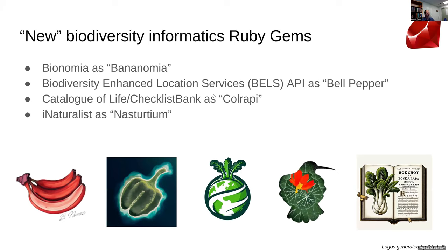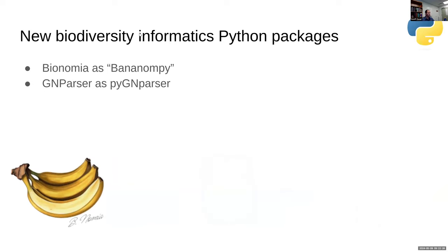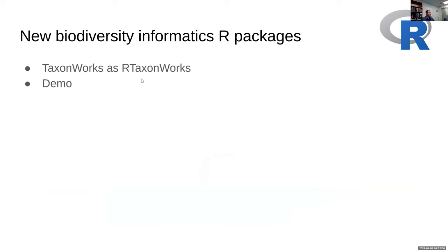These projects are available now: Bionomia is wrapped, along with the Biodiversity Enhanced Location Services, Catalog of Life and Checklist Bank as Chlorophy, and iNaturalist as Asterium. There's also Bok Choy wrapping the BHL MIMS project — not released quite yet but coming soon. I also did a Python wrapper for Bionomia and GN Parser. Most recently I've been developing R-TaxonWorks, and I'll do a brief demo of that now.